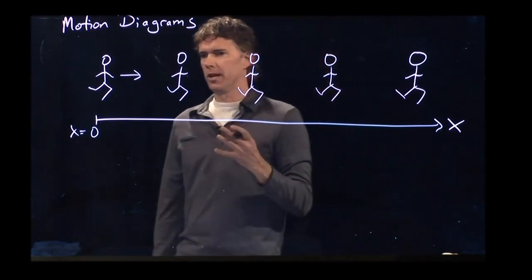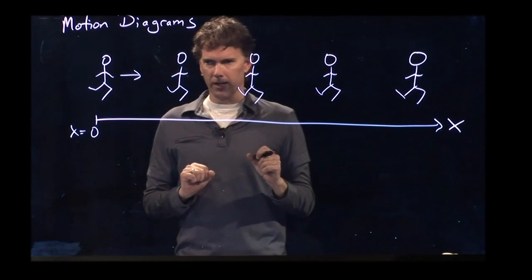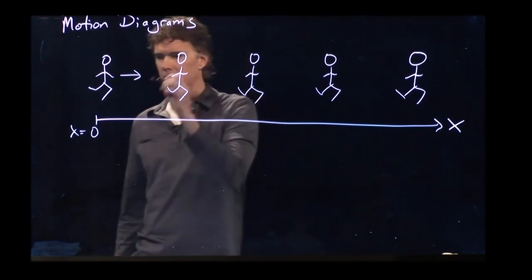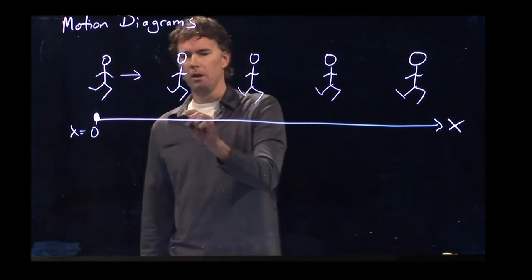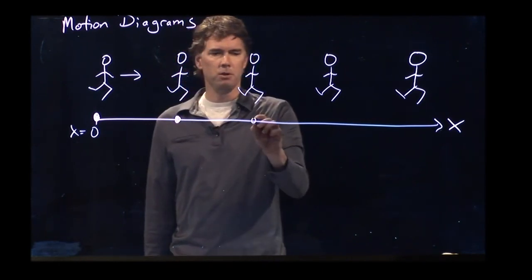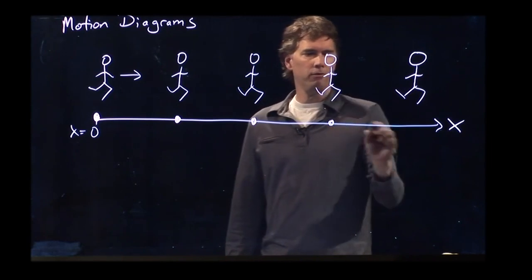How do we deal with motion diagrams? You don't have to draw images over and over again. It gets a little cumbersome. Just make it a dot. Person at time 1, person at time 2, time 3, time 4, and time 5.